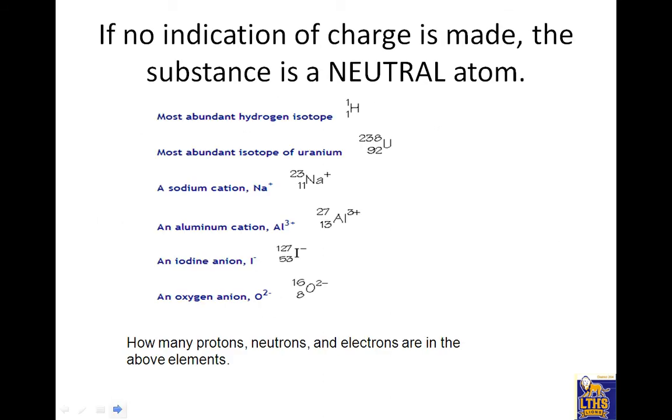Let's take a look here. So if no indication of charge is made, the substance is a neutral atom. So the most abundant hydrogen isotope is 1 over 1. So if you see that, I would write that as hydrogen-1. You don't need to write all this stuff, but you do need to write down this equals hydrogen-1. You don't need to write down this stuff, but uranium 238 over 92 would be, I look on the periodic table, I find U. It's number 92, and it is uranium-238.